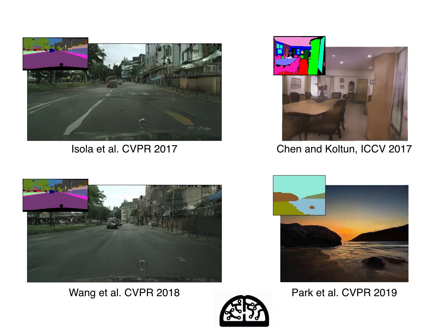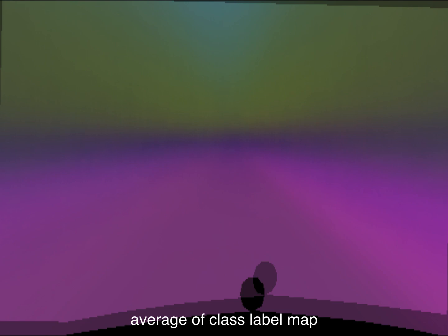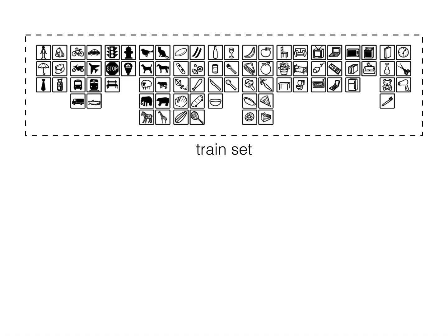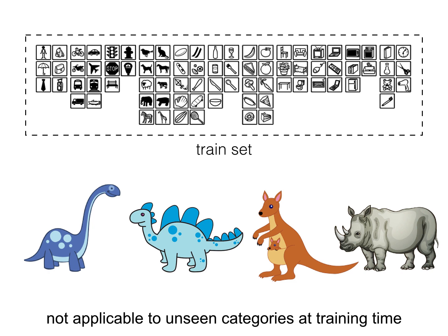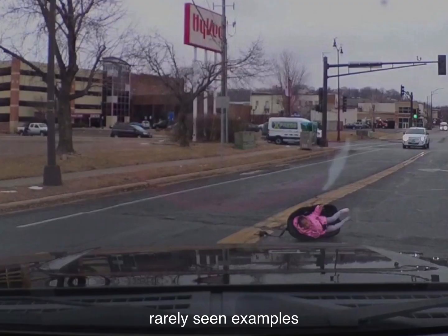Recent work in this direction has primarily used neural networks. These works have shown remarkable performance for a constrained data distribution, such as cityscapes, where one can expect certain labels at a particular location. However, once trained for a set of classes, these approaches cannot be used for diverse categories not available at training time. Generating rarely seen examples using these model-based approaches is not trivial.